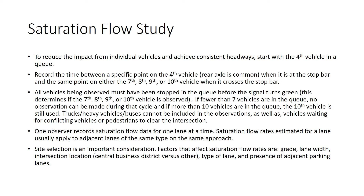To reduce the impact from individual vehicles and achieve consistent headways, we want to start with the fourth vehicle in a queue, and we only want to look at vehicles that are queued in our study observations. We record the time between the rear axle of the fourth vehicle when it crosses the stop bar and the rear axle of either the seventh, eighth, ninth, or tenth vehicle when it crosses the stop bar.